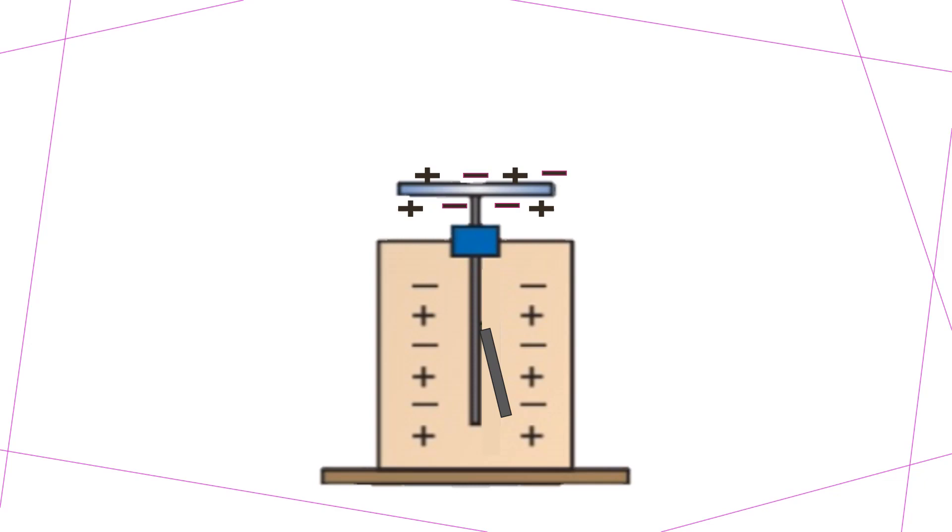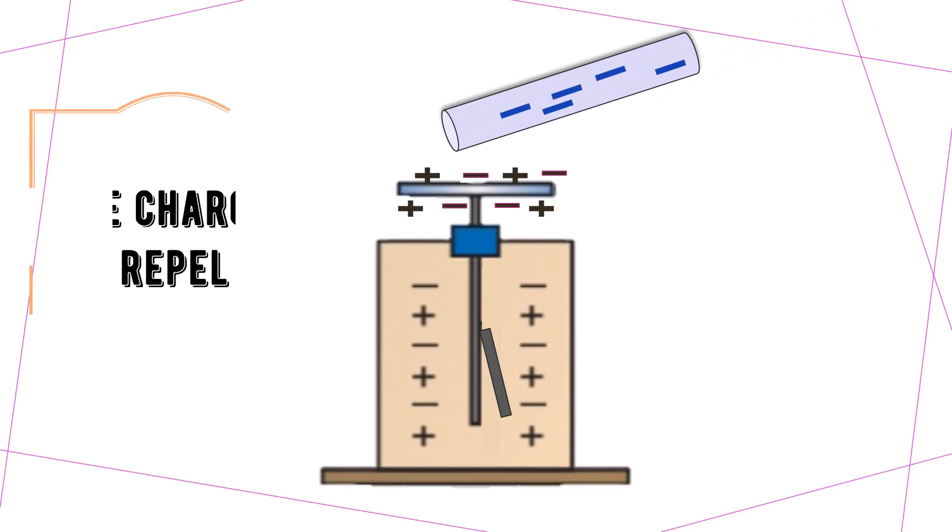Now let's bring a negatively charged object close to the electroscope. We learned that like charges repel each other. The object is negatively charged, so it will repel negative charges on the metal cap. Now both sides here are negatively charged, so the gold leaf will diverge, because same charges repel each other.